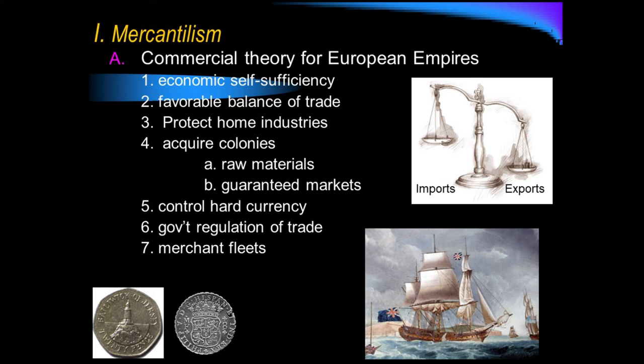There are five aspects to mercantilism that are important. First, you want economic self-sufficiency for the mother country, which in this case is England. Economic self-sufficiency meaning that they don't require anything from any other nation, any other country.